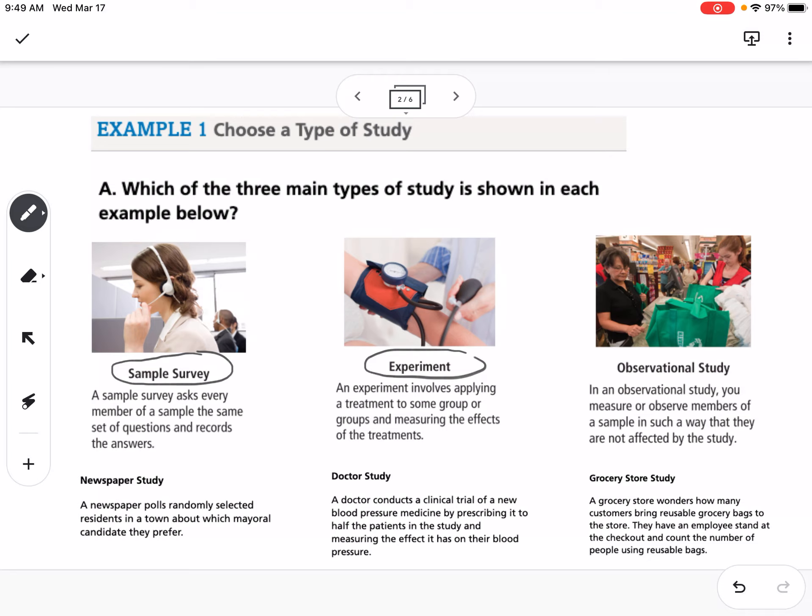And then our third type is an observational study. You measure or observe members of a sample in such a way that they are not affected by the study. An example of that would be a grocery store study. A grocery store wonders how many customers bring reusable grocery bags to the store. They have an employee stand at the checkout and count the number of people using reusable bags.